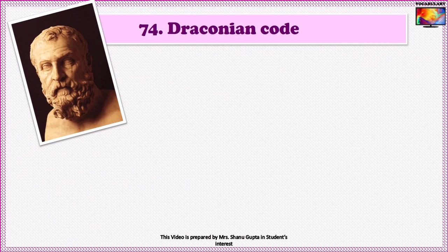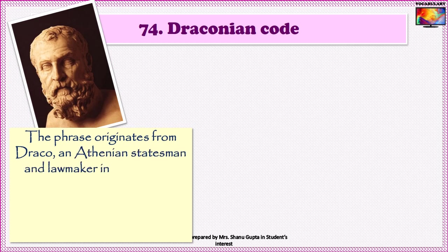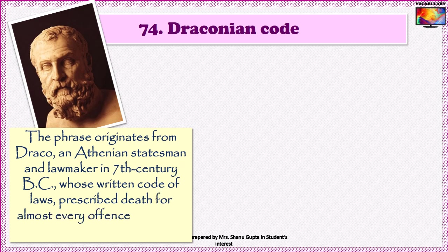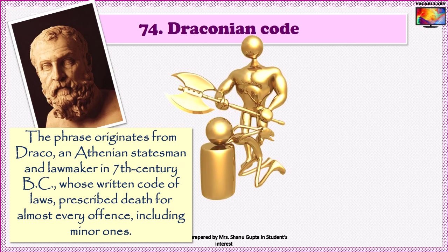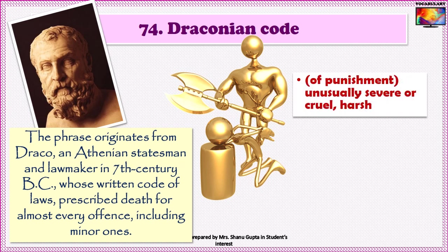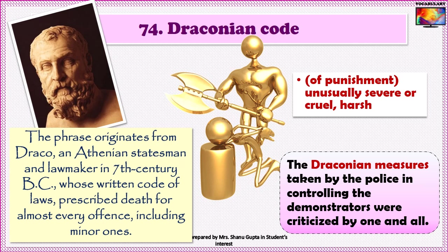The 74th idiom is 'Draconian code.' The phrase originates from Draco, an Athenian statesman and lawmaker in the 7th century BC, whose written code of laws prescribed death for almost every offence, including minor ones. So, Draconian measures or Draconian law is generally talked about in the context of punishment which is unusually severe or cruel and harsh. For example: 'The Draconian measures taken by the police in controlling the demonstrators were criticized by one and all.'